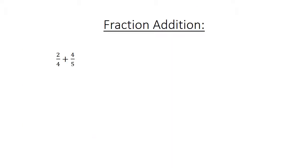Fraction addition. 2 over 4 plus 4 over 5. Find the lowest common multiple. 10 over 20 plus 16 over 20 equals 26 over 20 equals 1 and 3 over 10.